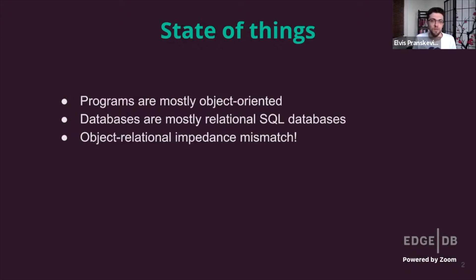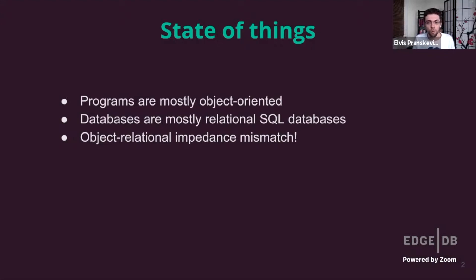Impedance comes from the electrical engineering field, where mismatching impedances cause an electrical circuit to be a lot less efficient. This is the same for software systems — coupling relational databases and object-oriented program systems is not efficient. A lot has been written about this, a lot of solutions proposed, but unfortunately it seems like our database tools, at least our database APIs and frontends, are barely more expressive or efficient than they've been in 2005.